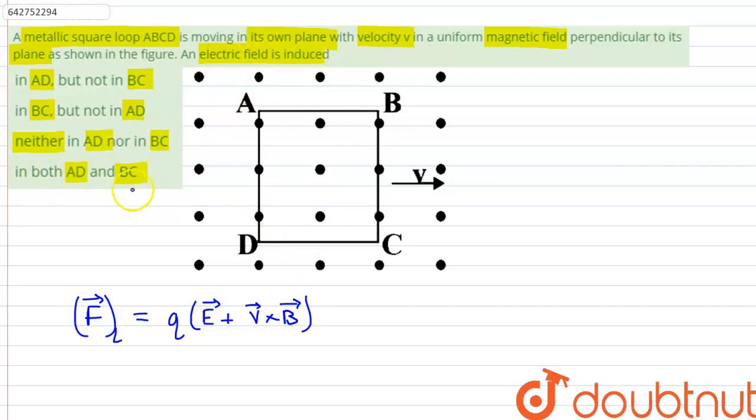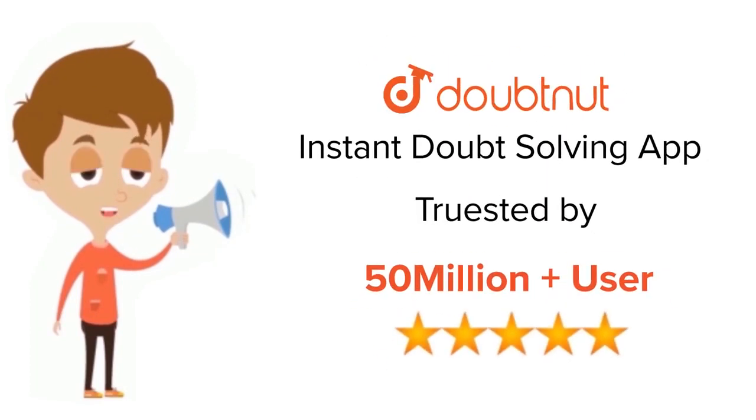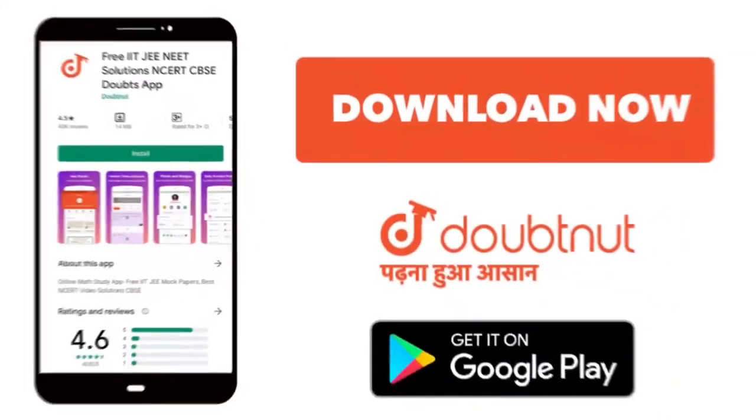So the answer is that there will be an induced electric field in both AD and BC. Thank you. For class 6-12, IIT-JEE, and NEET level, trusted by more than 5 crore students, download Doubtnut app today.